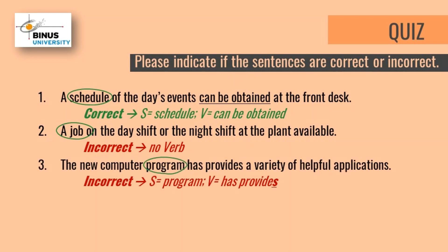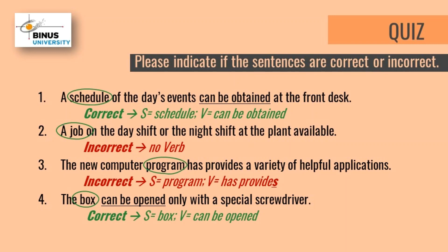Number three: The new computer program has provides a variety of helpful applications. There is a subject, which is program, and it seems that there is a verb, which is has and provides. But since it comes with the present perfect tense form, it should have been written as has provided instead. So it's still incorrect. Number four: The box can be opened only with a special screwdriver. There is a subject, the word box, and a verb, can be opened. So this is a correct sentence.